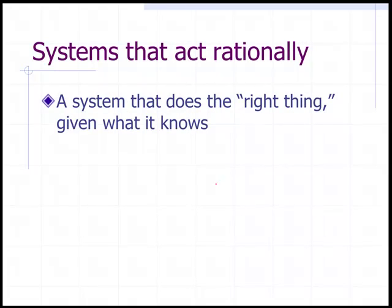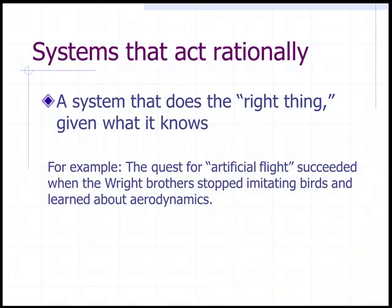Systems that act rationally: a system that does the right thing given what it knows. For example, the quest for artificial flight succeeded when the Wright Brothers stopped imitating birds and learned about aerodynamics. So with systems that act rationally, the goal is to just do the right thing and not worry about trying to do it like a human or even think like a human.